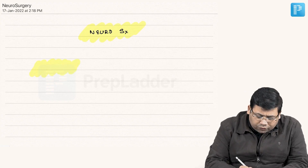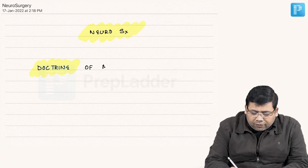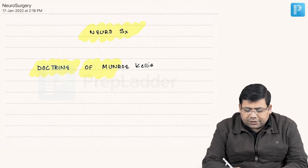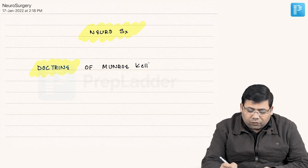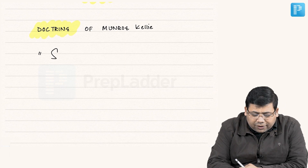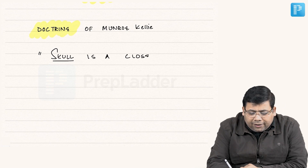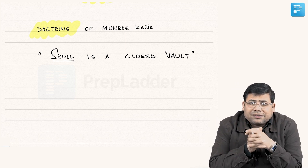The first thing we are doing is the doctrine of Monro-Kellie. Without this, there is no importance of the chapter. The doctrine of Monro-Kellie is a very important topic for all of us. The doctrine says that the skull is a closed vault — this single statement is the USP and speciality of this chapter.